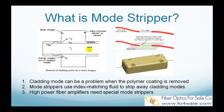One solution is to splice the short fiber to a longer length of passive fiber. The passive fiber can remove the light in cladding modes. Another solution is to use a drop of index matching fluid on the fiber, as shown in this picture.